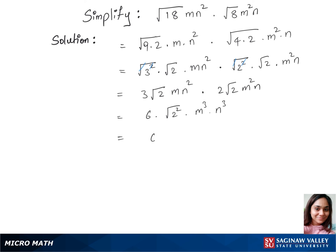Now we have 6 times 2 times m cubed and n cubed. Now we have 6 times 2 is 12 m cubed n cubed. This is our final answer.